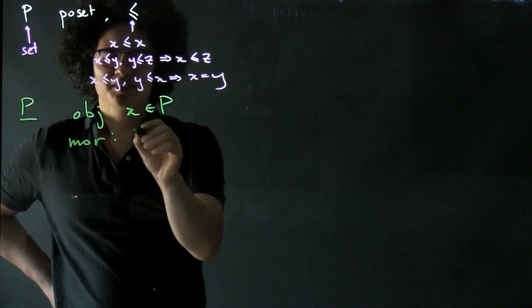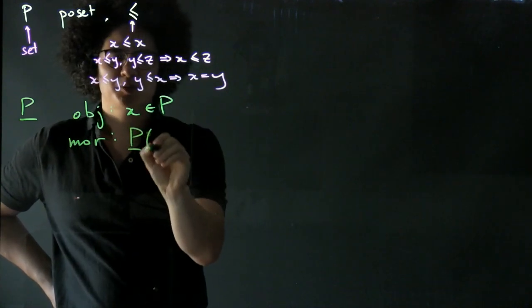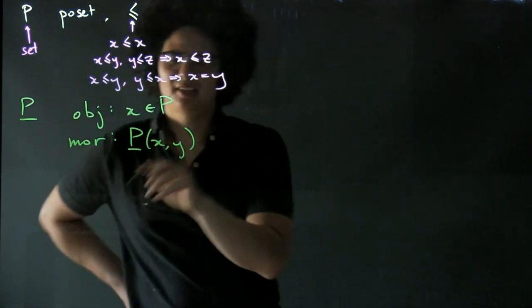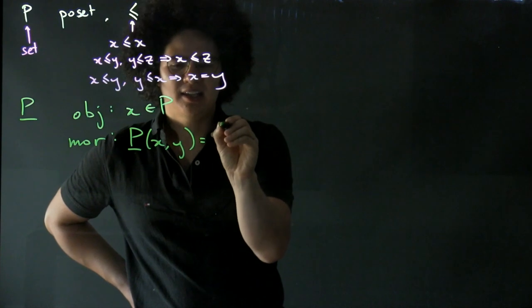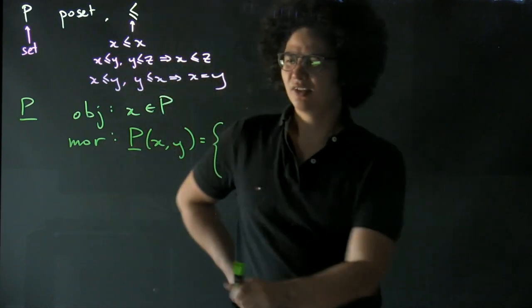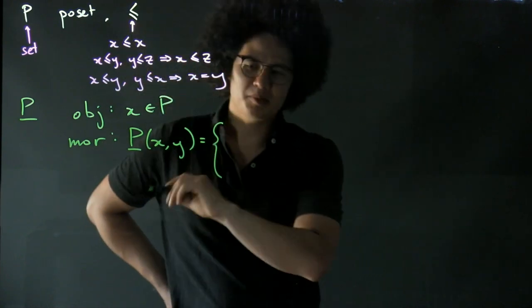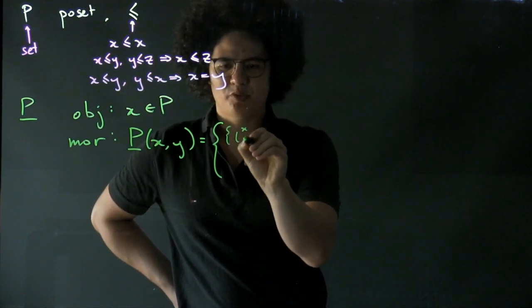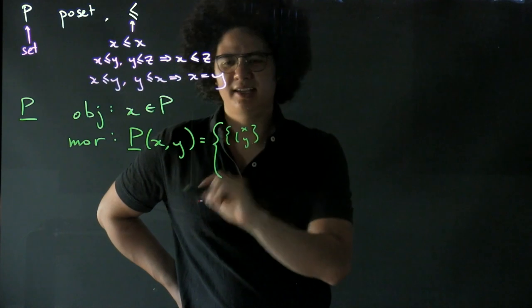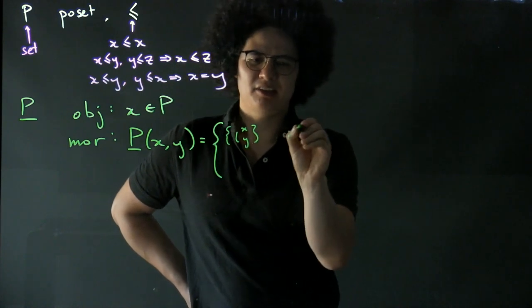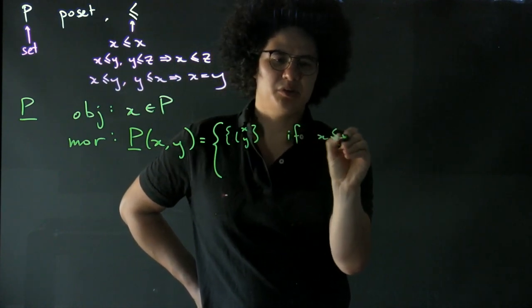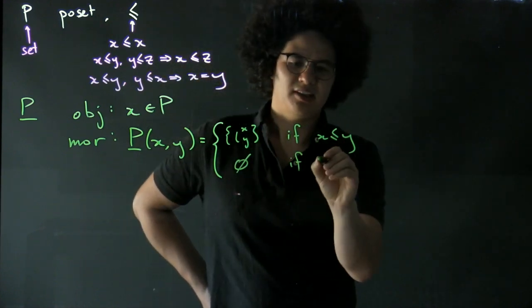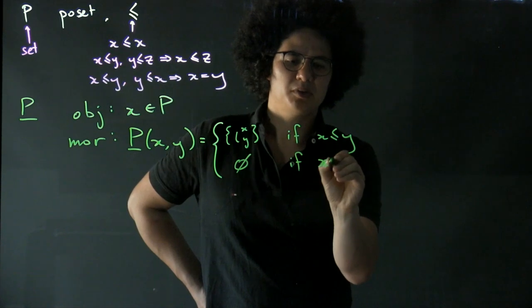Our morphisms. So I want to say what the set of morphisms between two elements x and y is for any two elements x and y in P. And we're going to have two types of hom set. The first is going to be a singleton with a map from x to y, which I'll denote like that, and that's if x is less than or equal to y. And then we're going to have the empty set if x is not less than or equal to y.